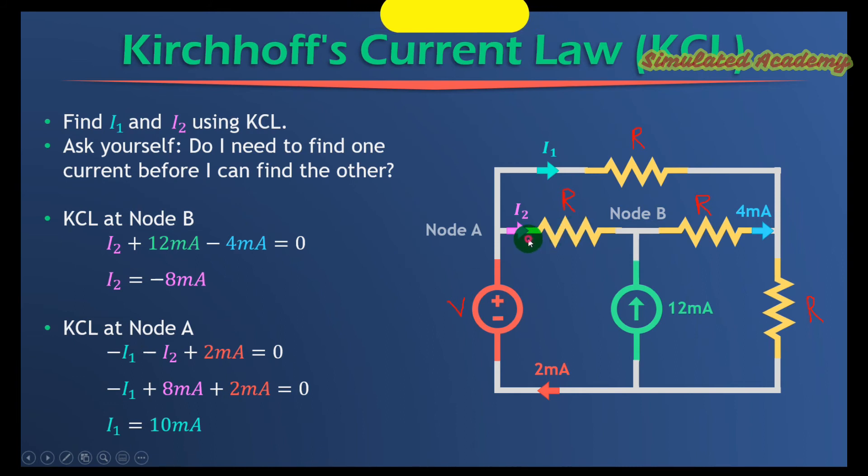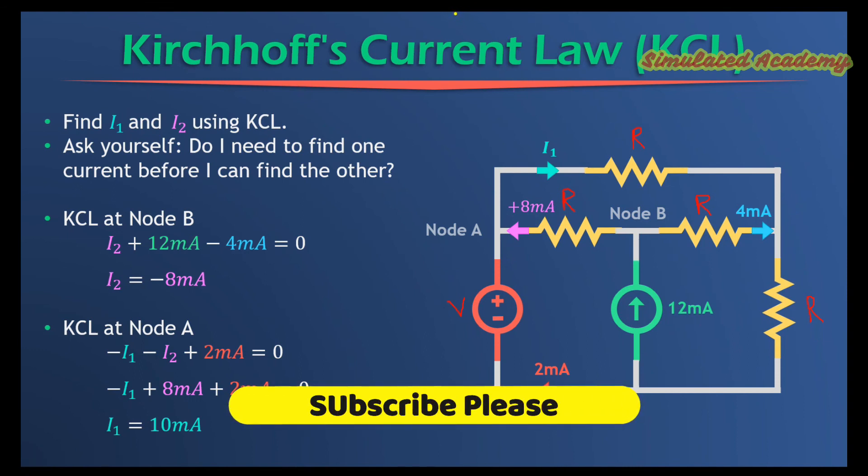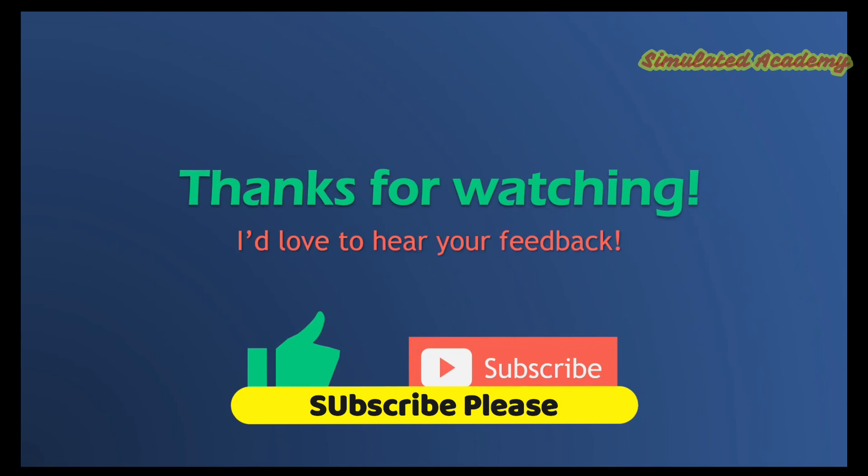Now here's an important point. Yes, I told you that minus 8 mA will flow in this direction, right? But it can also be said that a positive current of 8 mA is flowing in the reverse direction. So this was a very simple problem to tell you how to use KCL. Thank you so much.